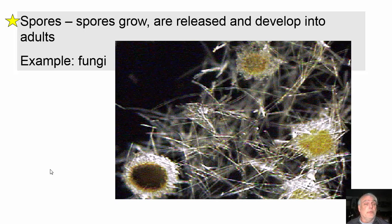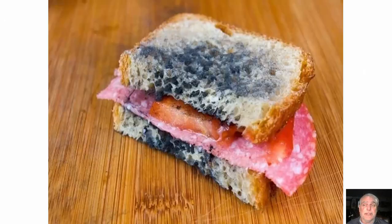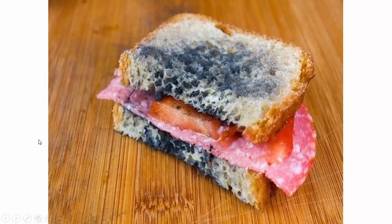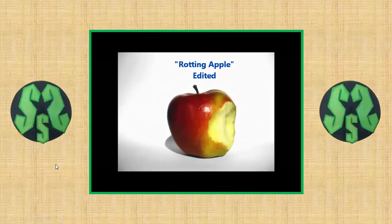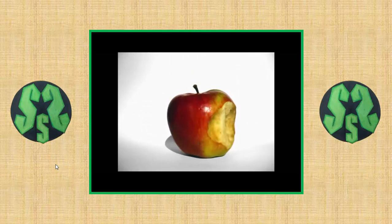Spores are released and develop into adults, kind of like seeds. Fungi are a good example — and fungi are not technically plants. Mold is a pretty nasty example of this. Here's a time-lapse clip of an apple starting to rot.